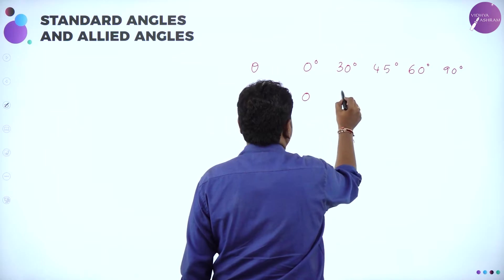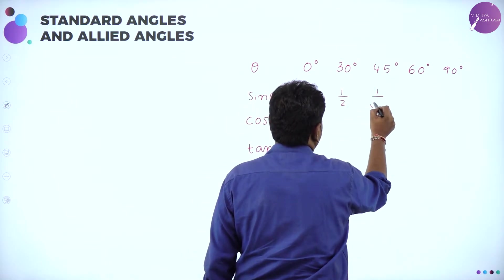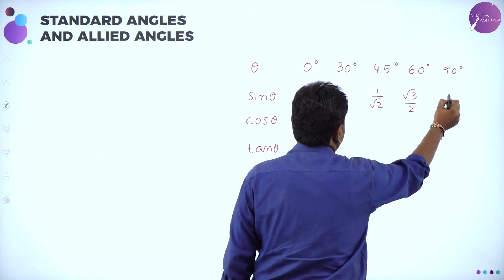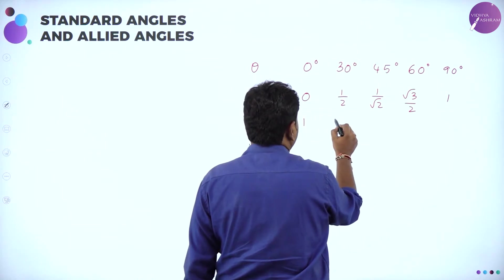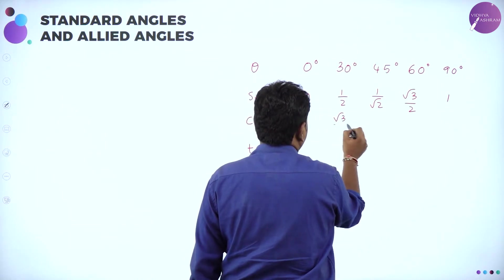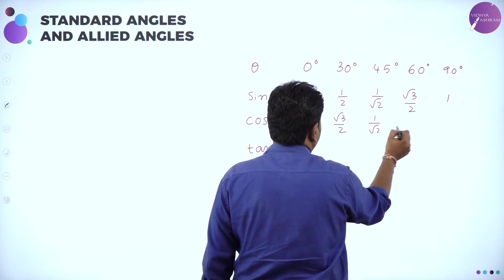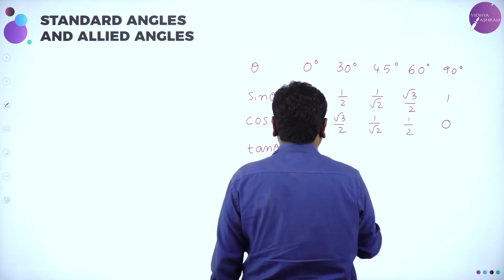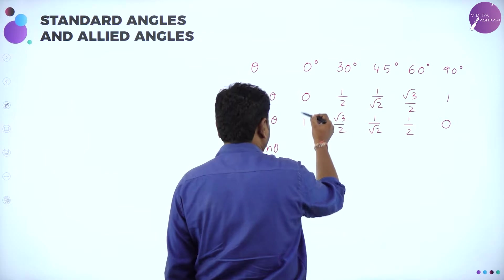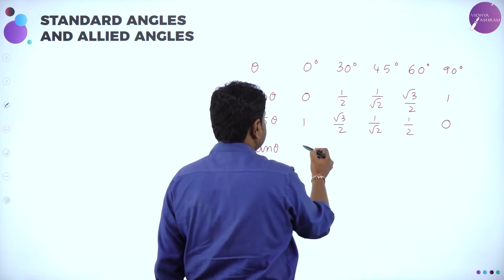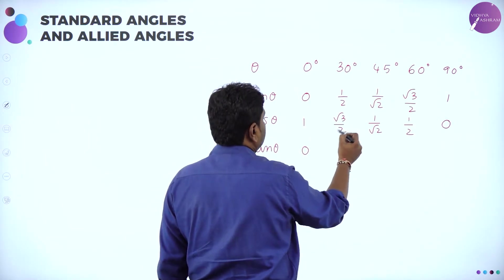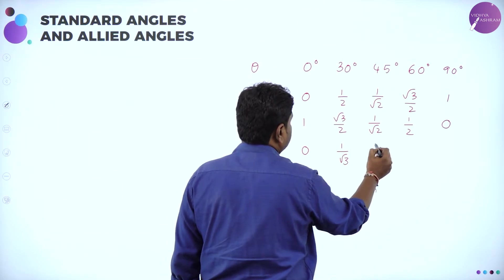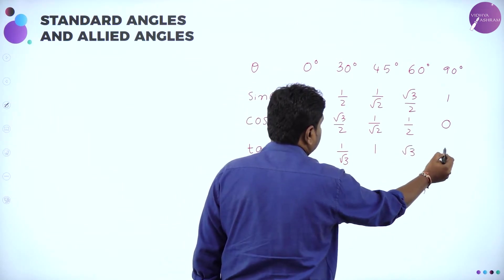sin 0° = 0, sin 30° = 1/2, sin 45° = 1/√2, sin 60° = √3/2, sin 90° = 1. For cos: 1, √3/2, 1/√2, 1/2, and 0. For tan: sin/cos, so 0/1 = 0; then 1/√3, 1, √3, and not defined.